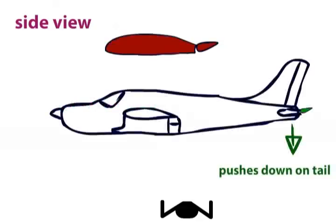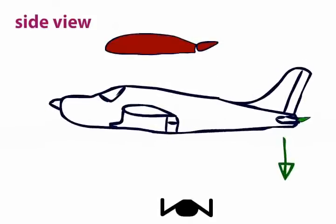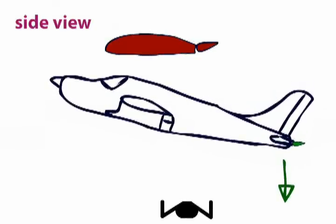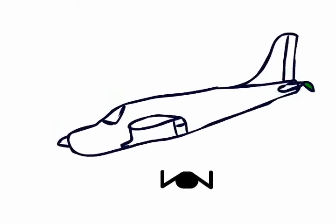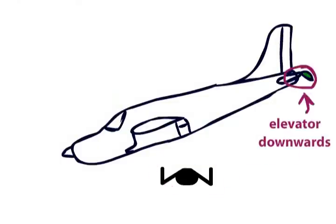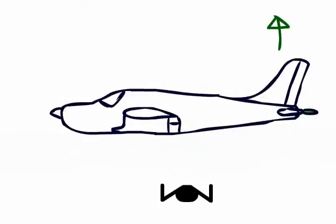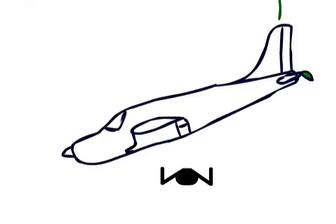This will push the tail down and move the nose up, causing the aircraft to climb. To descend, you will push the yoke forwards. The elevator will move down, the angle of attack at the tail will increase, and this has the effect of increasing the lift at the tail. The tail will be lifted, which will push down the nose and the aircraft will descend.